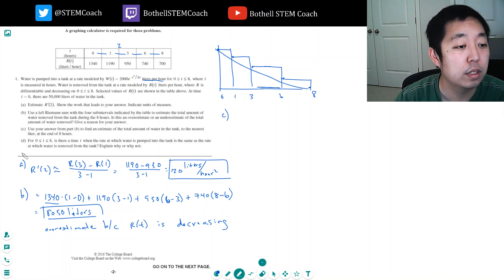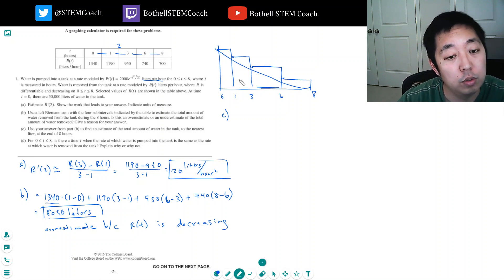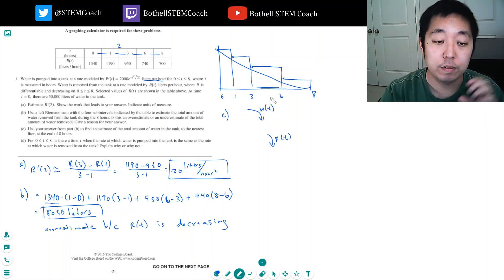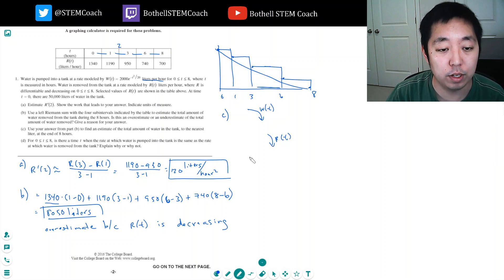Use your answer from part b to estimate the total amount of water in the tank to the nearest liter at the end of eight hours. You have to think of the tank: I have w(t) pumping in and r(t) pumping out. Over eight hours, the water volume would be 50,000 (what we start with) minus how much we pumped out plus how much we pumped in.